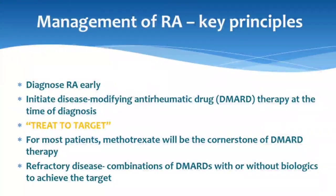Radiographic changes like periarticular osteopenia are also seen. When we look at the management of rheumatoid arthritis, there are certain key principles. We must diagnose rheumatoid arthritis early — in Nottingham University they had an early arthritis clinic where patients with arthritis in the first six weeks of illness were referred. The basic aim is to pick RA early and start DMARD treatment early for better outcomes. Initiate disease-modifying anti-rheumatic drugs at the time of diagnosis; once the diagnosis is made, there is no reason to delay DMARDs.